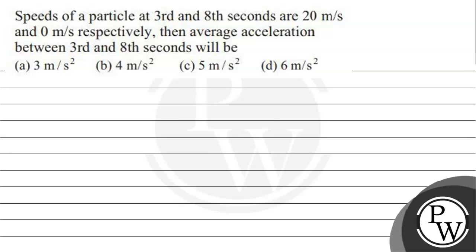Hello, let's read this question. The speed of the particle at third and eighth seconds are 20 meters per second and 0 meters per second respectively. Then average acceleration between third and eighth second will be: option a, 3 meters per second squared; option b, 4 meters per second squared; option c, 5 meters per second squared; and option d, 6 meters per second squared. Now let's start.